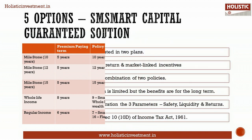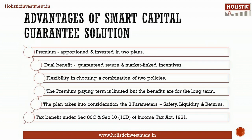Now let us move on to the advantages and disadvantages of Max Life Smart Capital Guaranteed Solution. The premium paid is apportioned and invested in two plans. It aims to provide a dual benefit: a safety net to the investor with the promise of guaranteed return, along with an opportunity to participate in market-linked returns. The premium paying term is limited, but the benefits are for the long term.